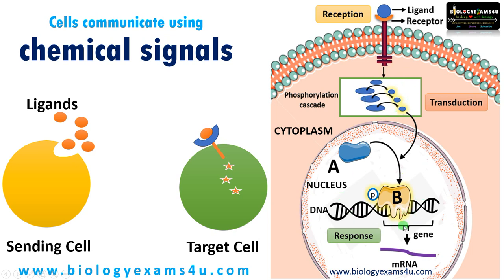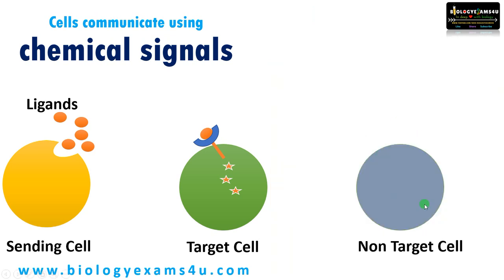Cellular response is often a gene expression, a gene suppression, or production of certain hormones, ultimately leading to cellular responses like cell growth, cell division, and cell differentiation. A non-target cell doesn't have this receptor, therefore this ligand has no effect on a non-target cell.